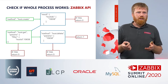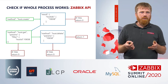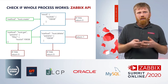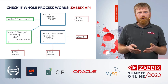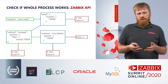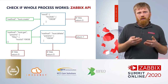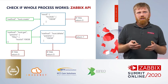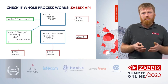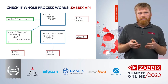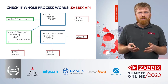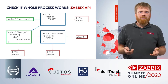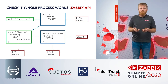As the next step, we actually connect to the API and execute a different method called host.get. If that one fails, again return zero; if it succeeds, continue. On the last step, we delete this host because it is a temporary test host. Again, if it fails, return zero; if it succeeds, return one — which means the whole workflow is working.